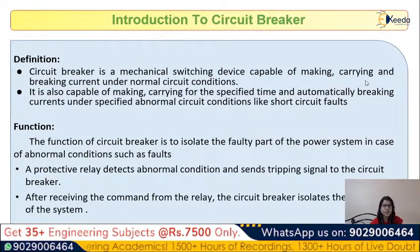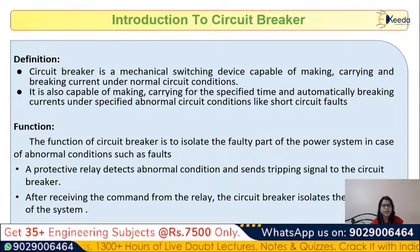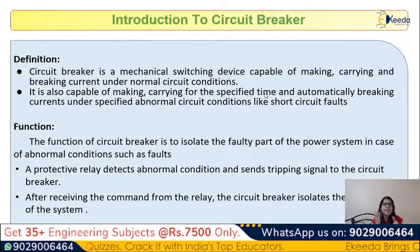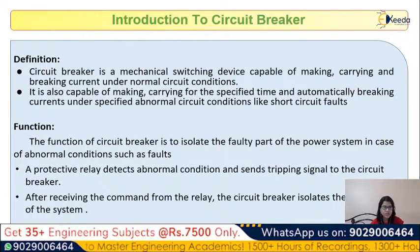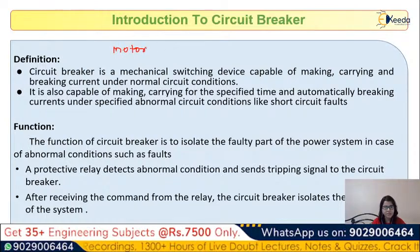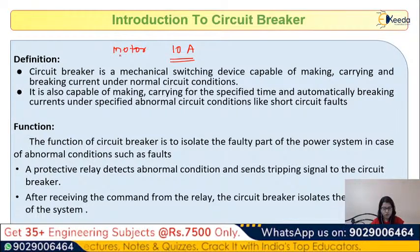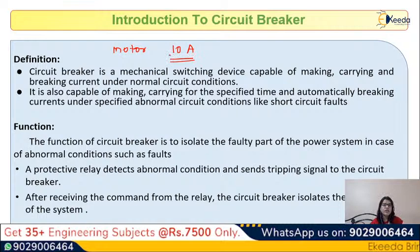A circuit breaker is a mechanical switching device that is capable of making, carrying, and breaking current under normal conditions. It is also capable of making, carrying for a certain period of time, and then automatically breaking current under abnormal conditions. For example, if a motor is rated at 10 amperes and continues to run at that current, that is the normal condition.